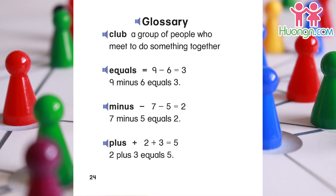Minus: seven minus five equals two. Plus: two plus three equals five.